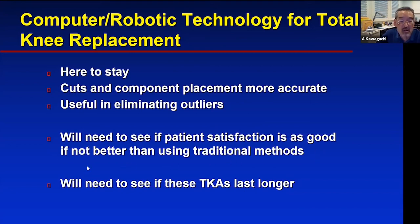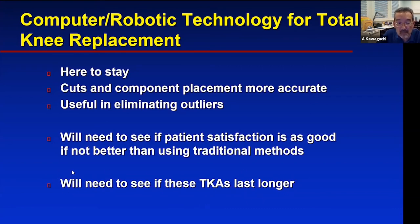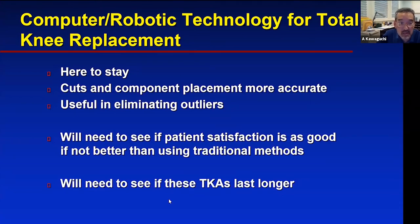The jury's still out on whether patient satisfaction is as good or better than with traditional methods. Some surgeons say they can do a knee replacement just as well without the robot. The real question we need to answer in the long term is: since we can put components in more accurately for each person, will these knee replacements last longer? We still don't know what degree of imperfection the body can tolerate. With robotic technique, we know we're putting it in as accurately as possible. We'll see in 20 years whether these knees hold up for 30 years or more.